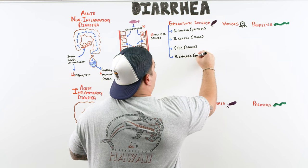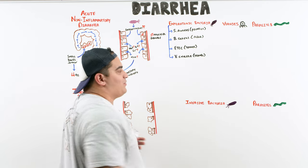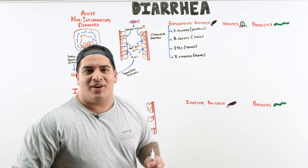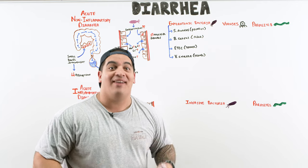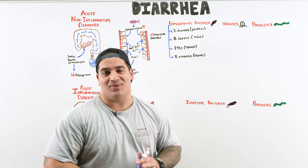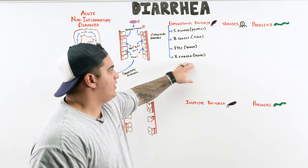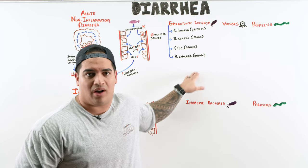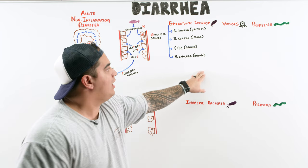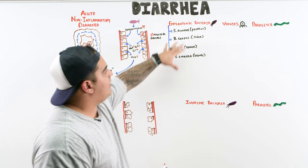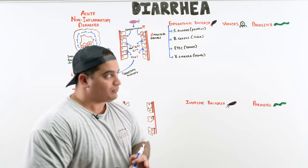A key buzzword for Vibrio cholerae is 'rice water stools' — heavy, voluminous stools. This is more of an endemic pathogen typically seen in less fortunate, resource-limited settings.